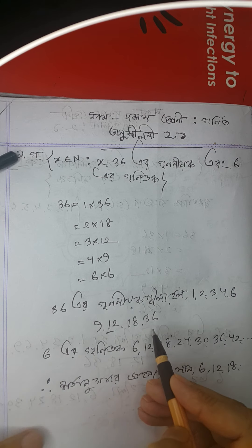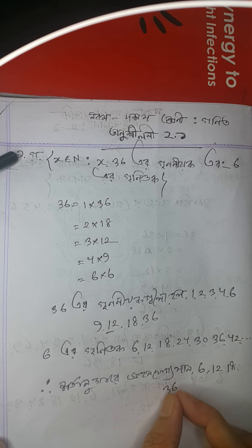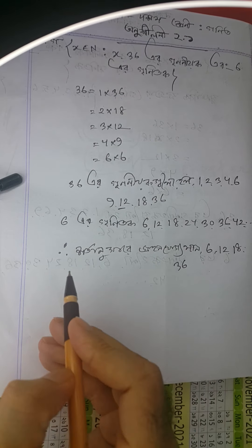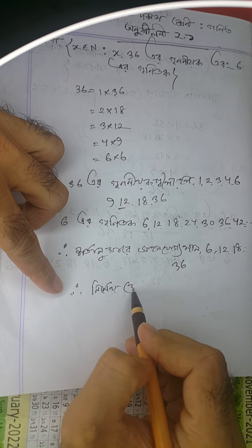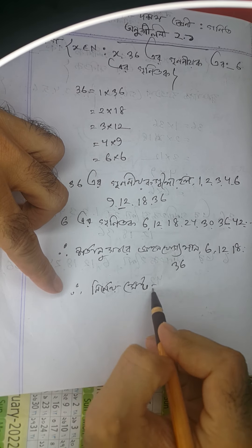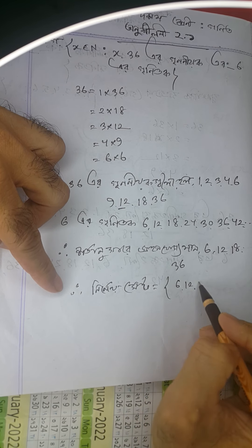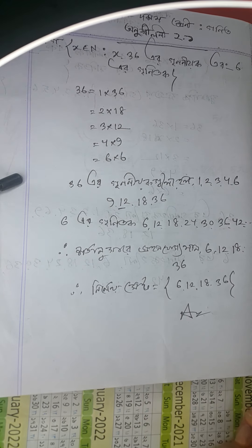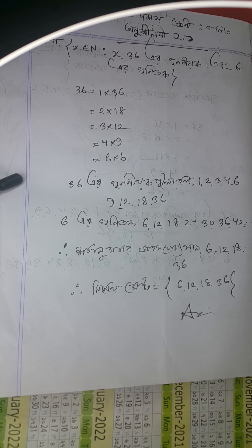So our final answer is: the set contains 6, 12, 18, and 36. These are all the numbers that are both factors of 36 and multiples of 6. Please subscribe to the channel if you found this helpful. Thank you for watching!